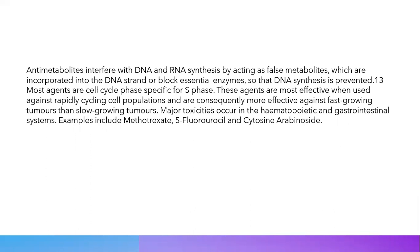Antimetabolites interfere with DNA or RNA synthesis by acting as false metabolites. They are incorporated into the DNA strand or block essential enzymes so that DNA synthesis is prevented. Most agents are cell cycle phase-specific, particularly for the S phase. These agents are most effective against rapidly cycling cell populations and are consequently more effective against fast-growing tumors than slow-growing tumors. Major toxicities occur in the hematopoietic and gastrointestinal systems. Examples include methotrexate, 5-fluorouracil, and cytosine arabinoside.